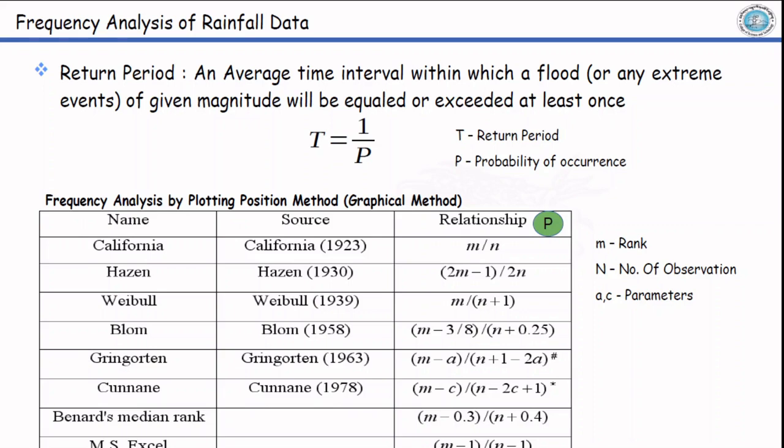The event with highest magnitude is given the first rank. If events are with same magnitude, then same rank is given. Based on the rank and number of observations, probability is calculated. Thereby we can calculate the return period.